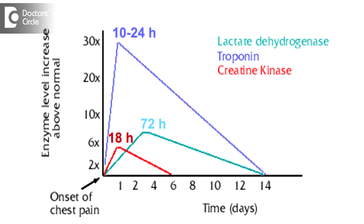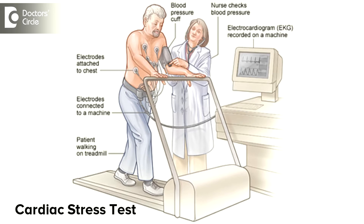If a patient with unstable angina has no ECG changes and the cardiac enzymes, particularly the troponin, are negative on multiple occasions at least six hours apart, then we may consider that as low-risk unstable angina. Such patients may be subjected to a stress test, or what we call a symptom-limited stress test. For those who cannot walk on the treadmill or cannot do a treadmill exercise stress test, we may do a pharmacological stress test.